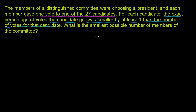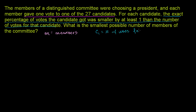What is the smallest possible number of members of the committee? Let's define some variables. Let m equal the number of members of the committee. And let's think about each candidate — we have 27 candidates, but let's pick some arbitrary candidate i, where i is any integer from 1 to 27. Let c sub i equal the number of votes for the i-th candidate.